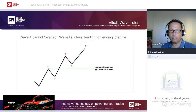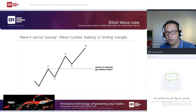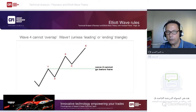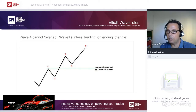Third rule: wave four does not overlap with the top of wave one. Wave four corrects wave three but does not go below the end of wave one. So in the five-wave sequence, wave two doesn't go below the start of wave one, wave four doesn't go below the end of wave one, and then wave five completes the sequence.